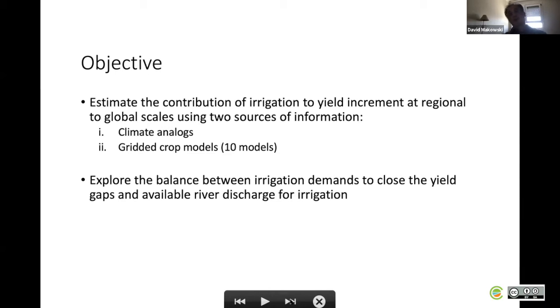The idea for this second objective was to compare the demand in terms of water necessary to close the yield gaps to the quantity of water available through the river discharge.